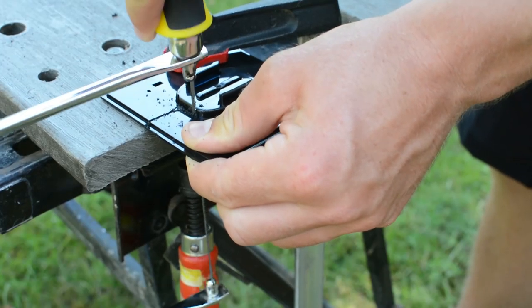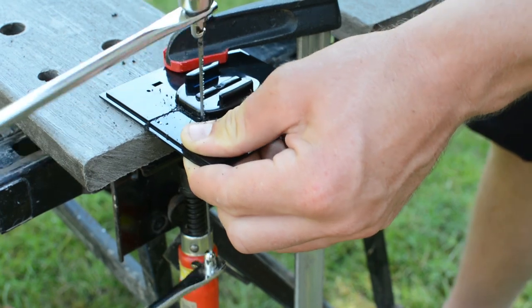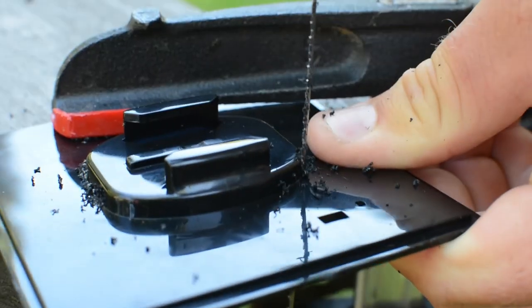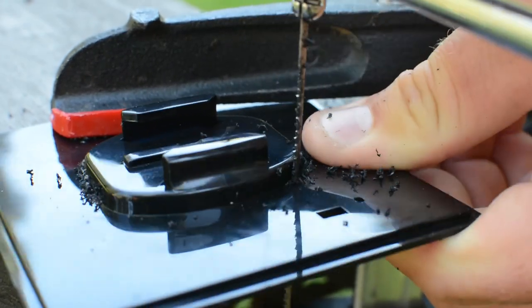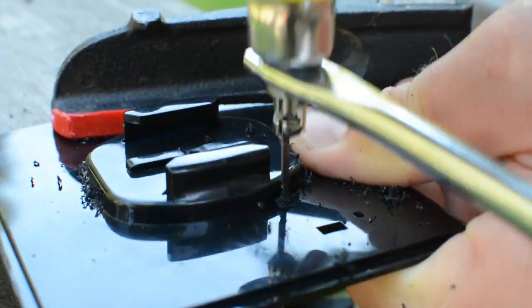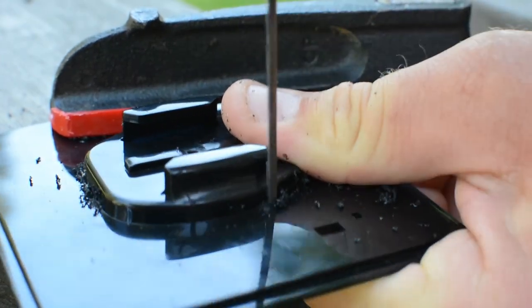Once the glue has fully cooled, we can go ahead and grab the cutting utensil that we're going to be using to cut out our mount. In my case I'm going to be using a little jigsaw, but if you guys want to use a dremel with a cutting wheel if you've got one of those, that would do a very quick and nice job.